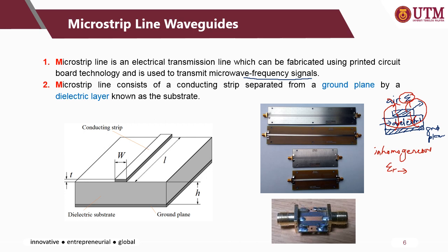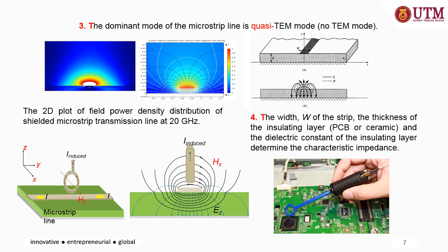The microstrip line consists of a conducting strip separated from a ground plane by a dielectric layer. Examples of the microstrip line show a line lying on the board — the dielectric material, probably FR4 or PCB board — backed with the ground plane, which usually has the same property as the strip line or conductor. As with the rectangular and circular waveguide, the dominant mode for the microstrip line is quasi-TEM mode — not TE10, TE01, or TM10 mode.